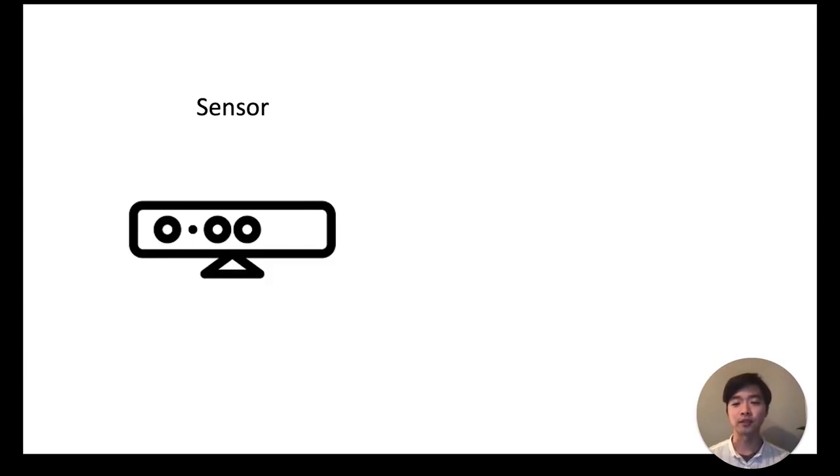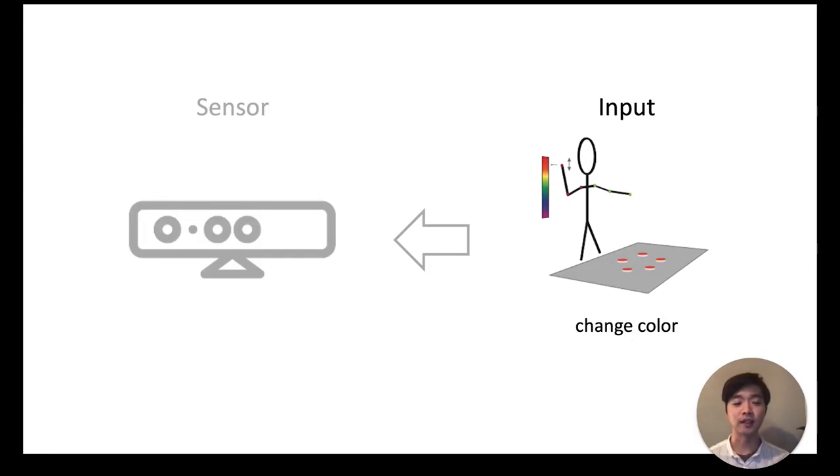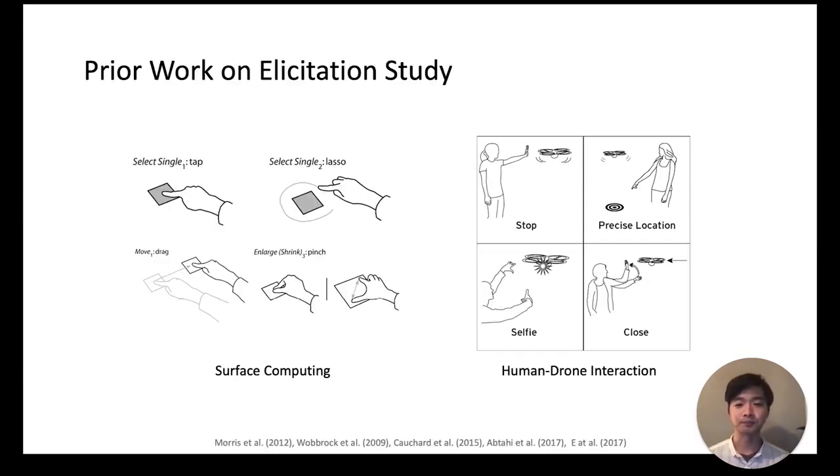Instead of choosing the sensor first and then figuring out the set of inputs the sensor can distinguish, we decided to flip this process around and first focus on finding a user-defined set of inputs for multi-robot systems. To do this, we conducted an elicitation study. Elicitation studies have been used in both HCI and HRI fields for applications like surface computing and human-drone interaction, allowing researchers to compile interaction sets that are intuitive to users. Research has shown that gestures authored by more people, regardless of whether they are researchers or participants, were preferred to those authored by fewer people. In our case, we used this elicitation study to answer the following research questions.